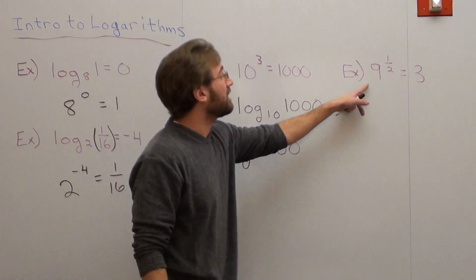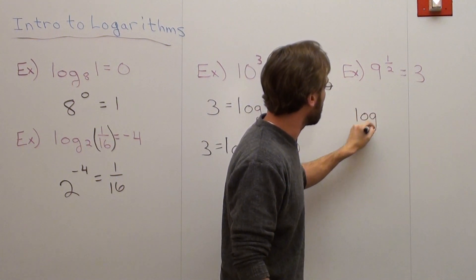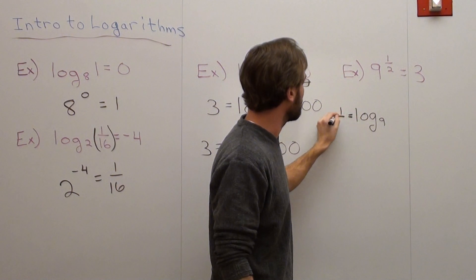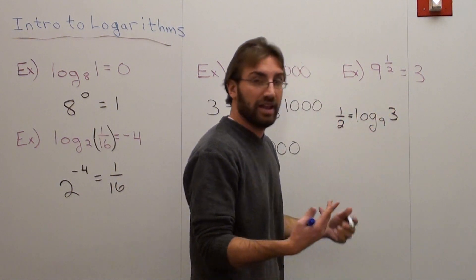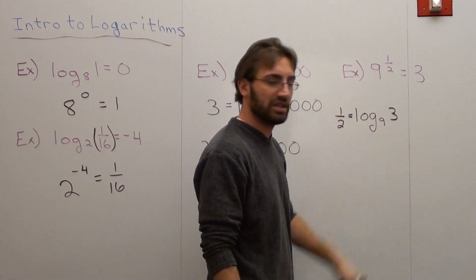Moving on. 9 to the power of 1 half equals 3. 9 is the base, so it's log base 9. It's equal to 1 half, the exponent, of 3. And that does make sense. 9 to the 1 half or 9 square root is equal to 3.